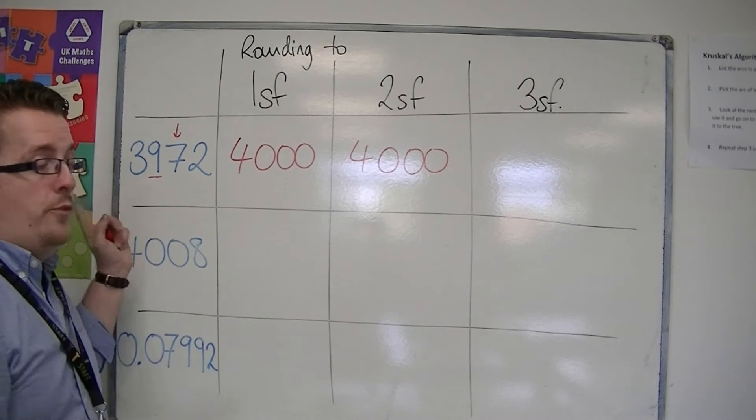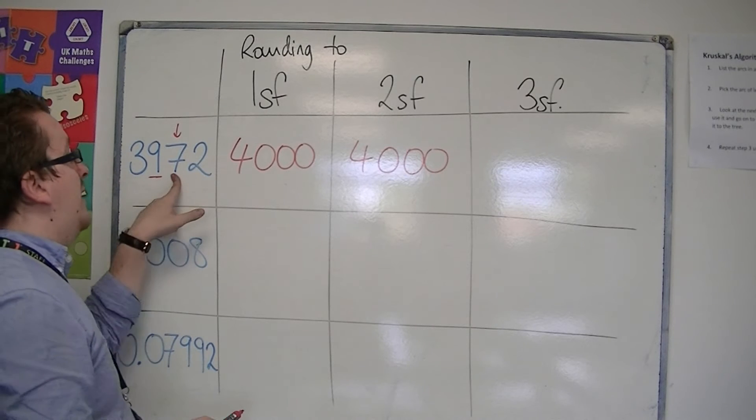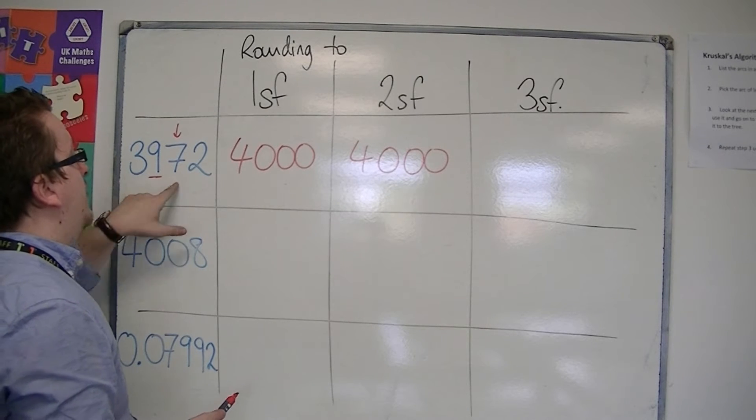Well, the choice would have been 3,900 or 4,000, and it's definitely closer to 4,000 because of that seven.